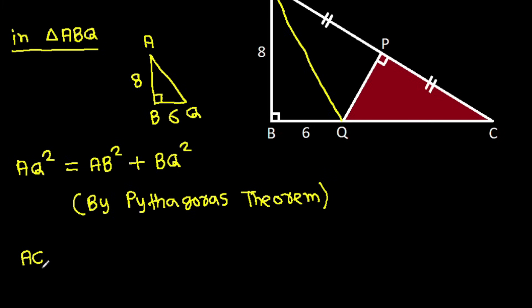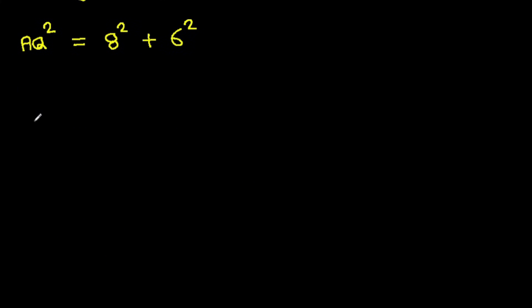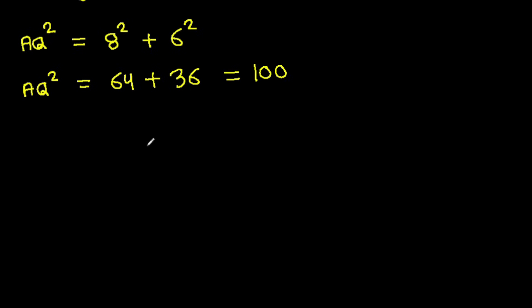So, AQ squared is equal to AB is 8 squared, plus BQ is 6 squared. And AQ squared is 64 plus 36, that will be 100. So AQ will be root 100, that will be 10.